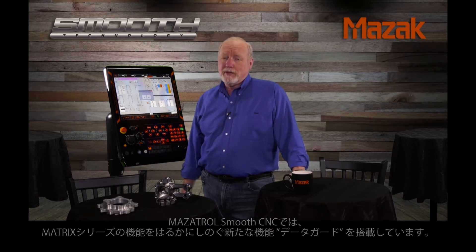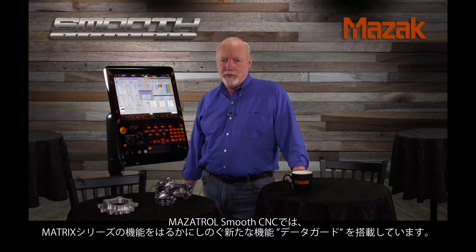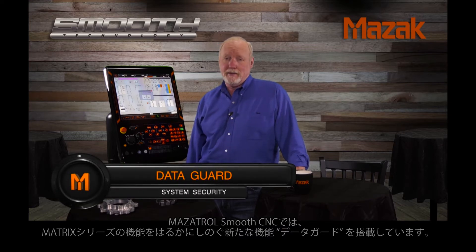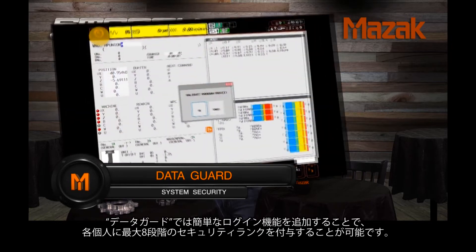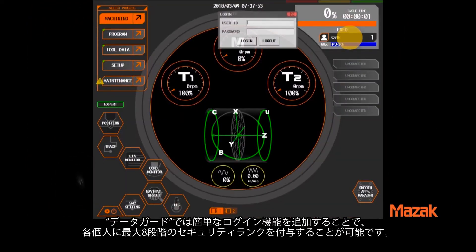However, on the Smooth Control we've gone far beyond this simple capability and introduced a feature called Data Guard. By adding a simple login, Data Guard gives you the ability to fine-tune your control with up to eight levels of user security.